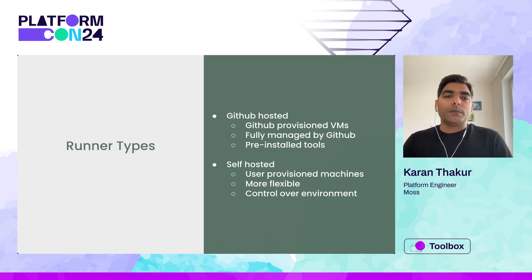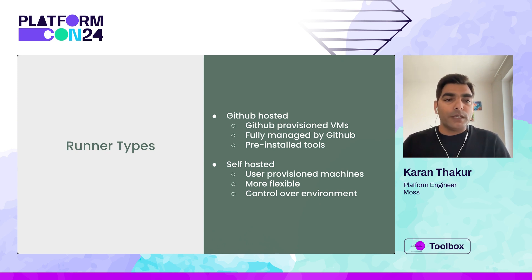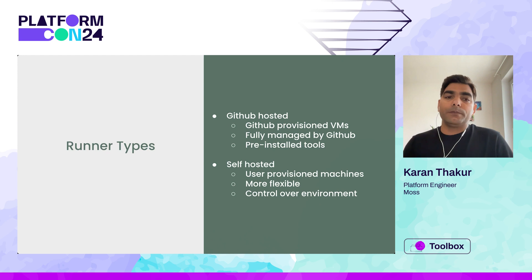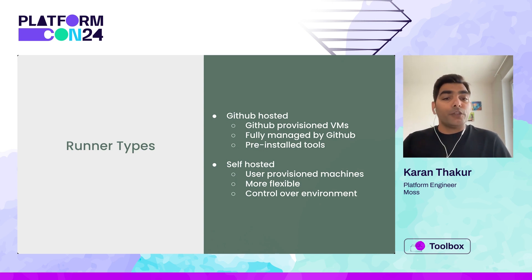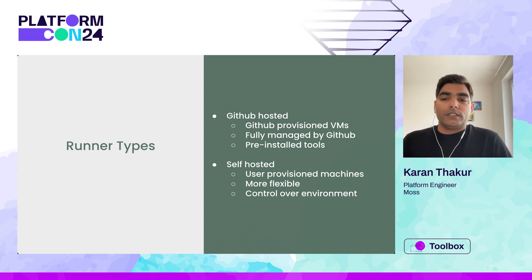So there are two types of runners. One we have seen is the GitHub-hosted runner — these are virtual machines hosted by GitHub. They are convenient because they are fully managed by GitHub, saving developers the hassle of setup and maintenance. They come with a broad range of developer tools installed. Then there are self-hosted runners — these are user-provisioned machines set up by the users themselves. They offer more flexibility and control over the environment. So why might one opt for self-hosted runners?